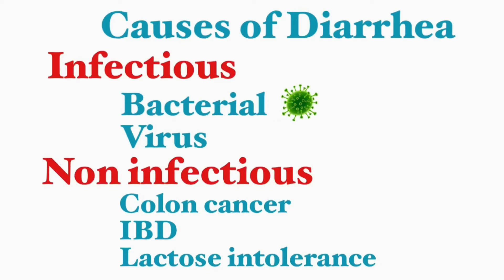Now, what are the causes of diarrhea? It can be infectious causes — bacteria such as Campylobacter, E. coli, and Shigella, or viruses such as Norovirus or Rotavirus. These kinds of diarrhea are usually acute, lasting less than two weeks. There is also bloody diarrhea, known as dysentery, also caused by Campylobacter, Salmonella, Shigella, and sometimes E. coli.